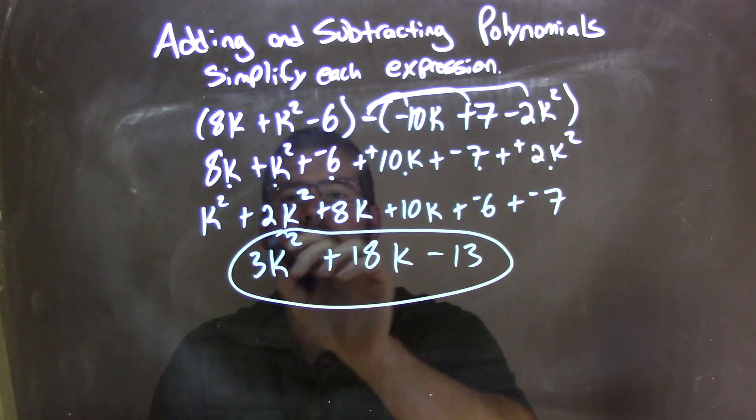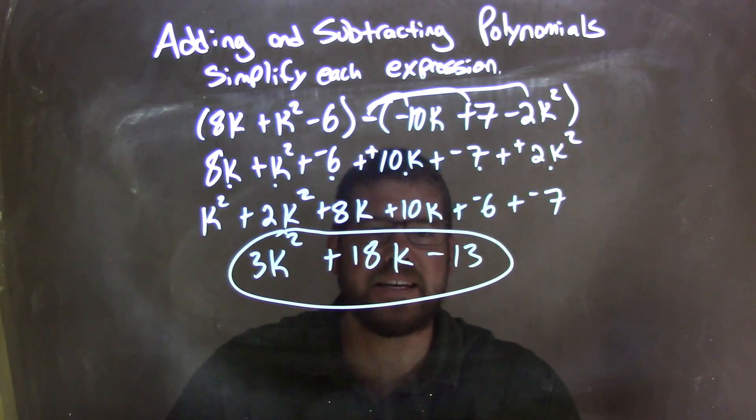So minus 13. And there we have it. Our final answer is 3k squared plus 18k minus 13.